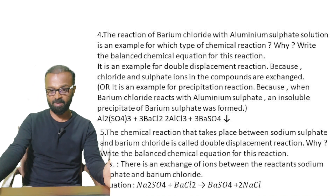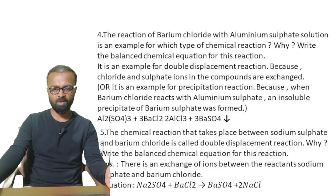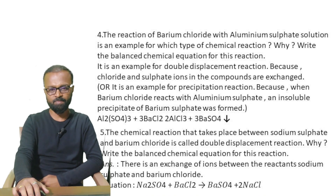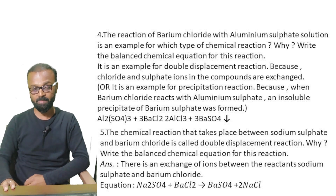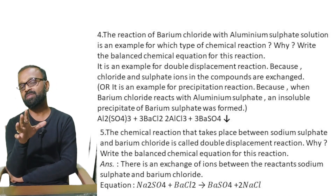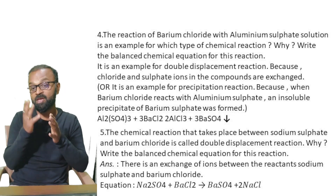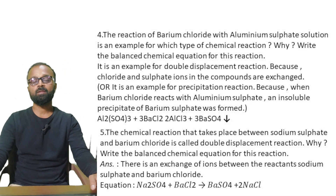There is no shortcut for chemical equations — you need to practice them. The next question also covers the same concept: the reaction between sodium sulfate and barium chloride is called double displacement because there is a mutual exchange of ions between barium and sodium. It is called a precipitation reaction because a white precipitate of barium sulfate forms. If they ask why it is a precipitation reaction, mention the formation of the white precipitate of barium sulfate.